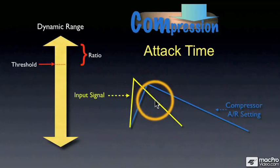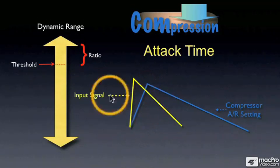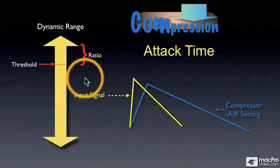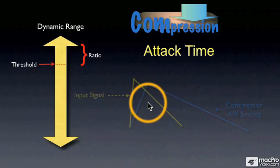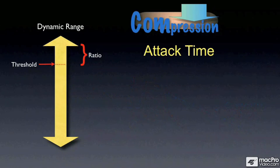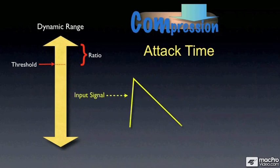the rest of the signal that is above the threshold will be compressed. If we want to compress those transients, then we have to set a compressor setting with an equally fast attack time.